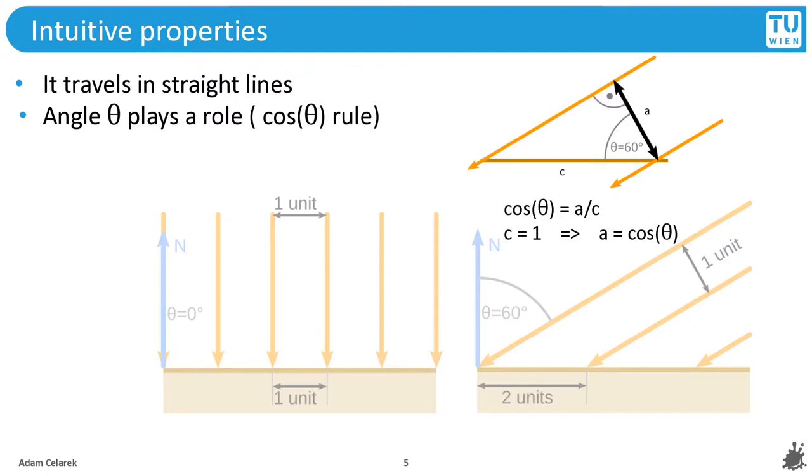The surface is lit less strongly and the percentage of light is precisely the cosine of the angle between the normal and the incident light direction, which can be calculated using simple trigonometry. The cosine is the adjacent leg divided by the hypotenuse. If we want to compute how much light arrives at a unit length, we can set c to one and we get cosine of theta. Obviously you will compute that in practice by taking the dot product between the normal and the light direction.